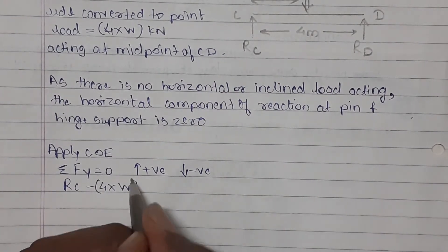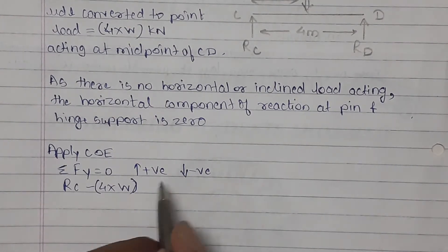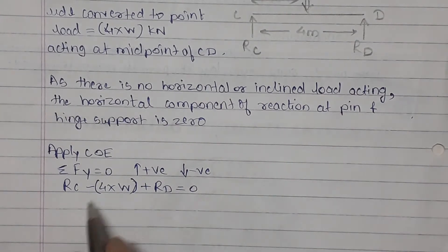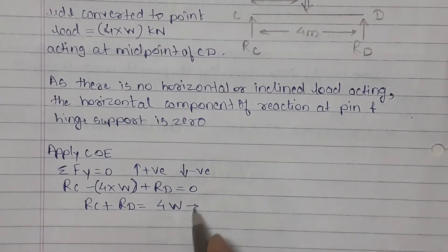minus 4 into W. It is a point load. UDL is converted to point load, which magnitude is this much. It is acting downward, so minus. Third is plus RD equal to zero. This can be written as RC plus RD equal to 4 times W. This is equation 1.